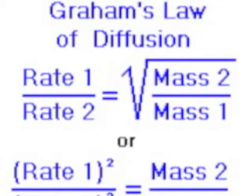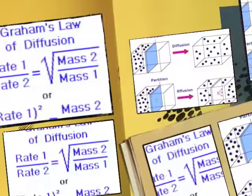Graham's Law states that the rate of effusion is inversely proportional to the square root of its molecular weight.